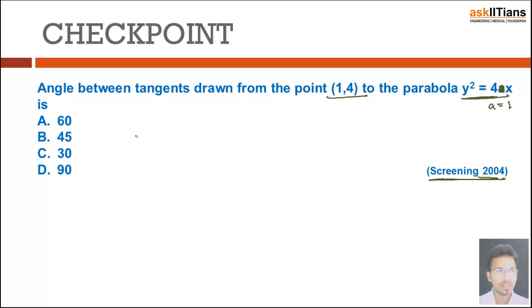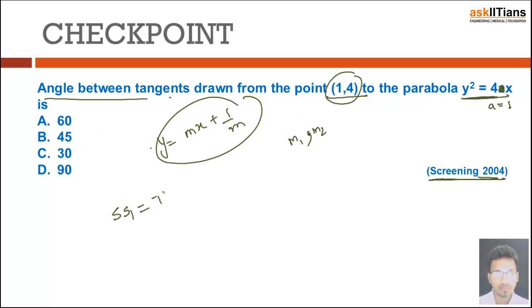So here a is given to be 1 and this is the angle between the tangents. Again we can use that standard thing y = mx + 1/m, it passes through (1/4, 1), apply that, find m₁m₂. But since we have just done the properties, let's see how we can utilize the properties. So pair of tangents directly we can do. This was a longer procedure, let's do the other way.